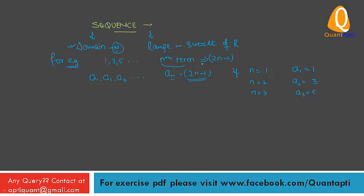N is a natural number and natural numbers start from 1, 2, 3 and so on. The range, which comes as A1, A2, A3, ..., AN, is from R — a subset of R — and the domain is from natural numbers.